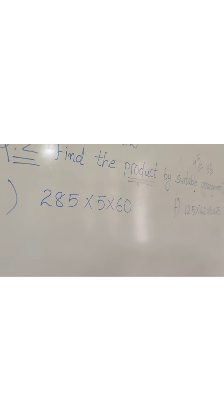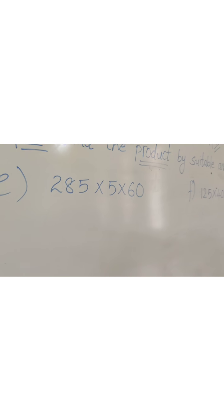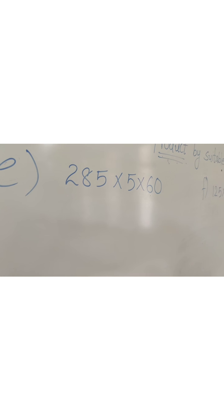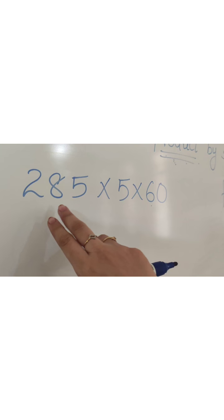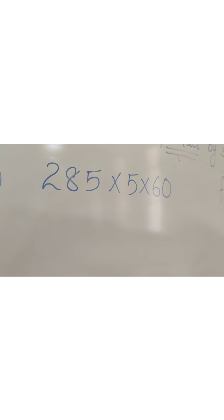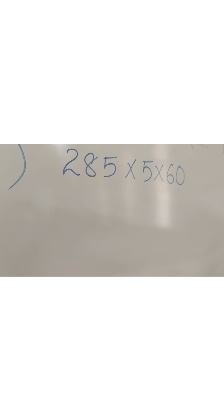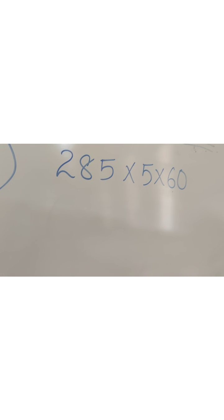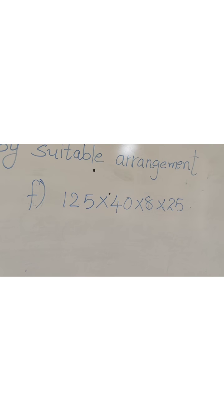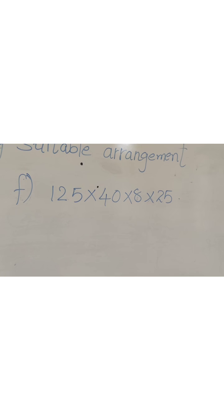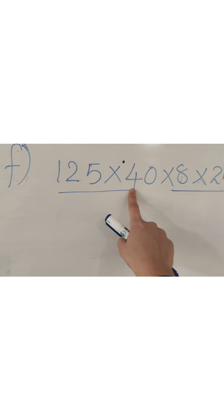Let's move to parts E and F — these are homework. You will try to solve them by yourself. The steps are: first, group the numbers such that you get 0 at the ones place. Take two numbers from the three that give zeros, multiply them, then multiply the result by the remaining number. For part F, you are having 4 numbers, so you can take pairs of 2 — any suitable pair.